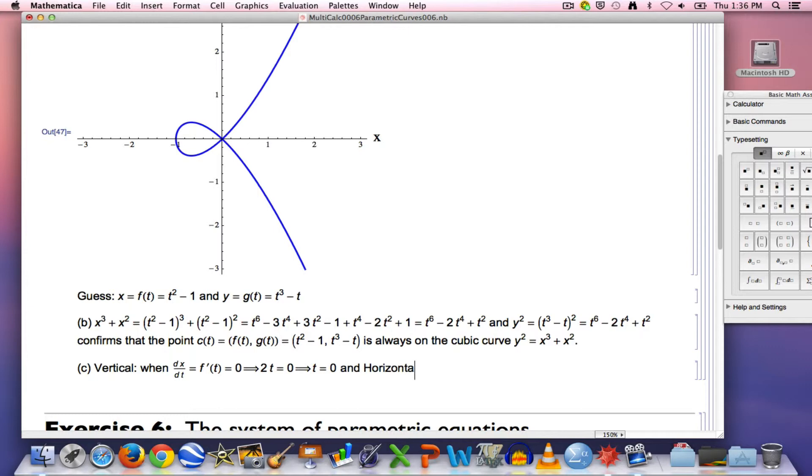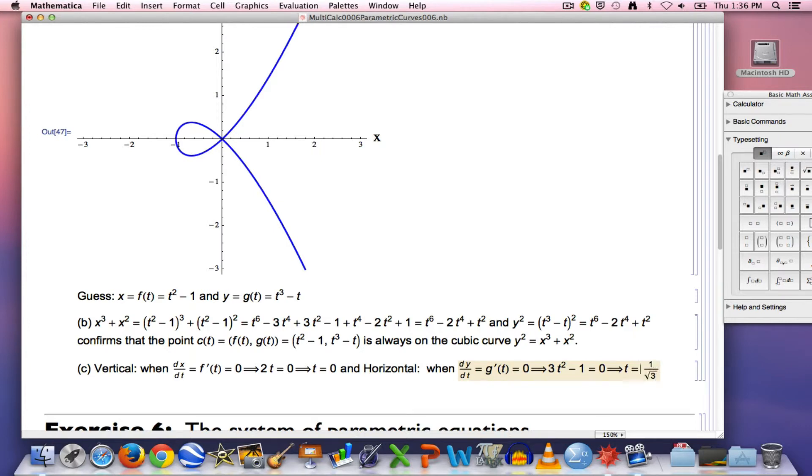How about the horizontal tangent line? That's going to be when there's no velocity, instantaneously speaking, in the y direction. When dy/dt, the derivative with respect to y is zero, when g prime of t is zero, if I set that equal to zero and solve for t, after finding the derivative, I'm going to get the equation 3t squared minus 1 equals zero, which will imply t is plus or minus 1 over the square root of 3. So we've got three values, one where it's vertical, two where it's horizontal, and that makes sense if you think about the picture.